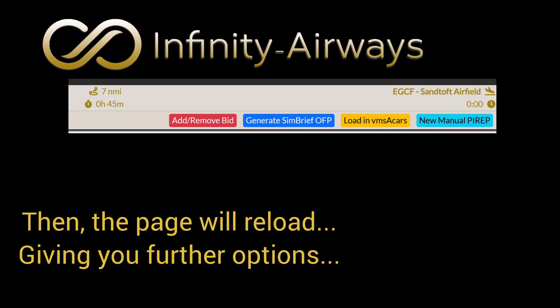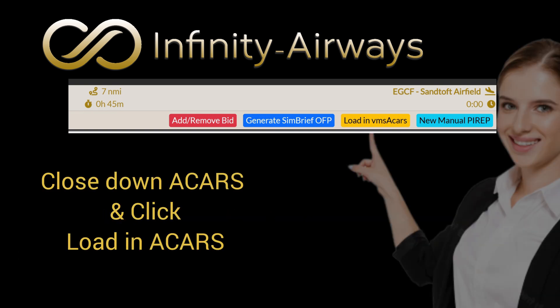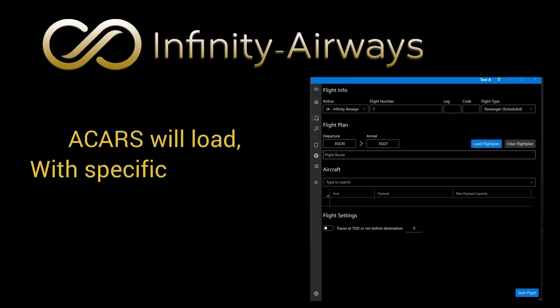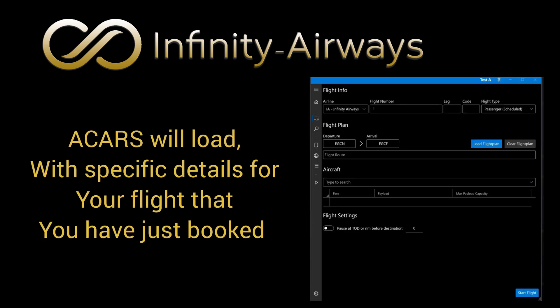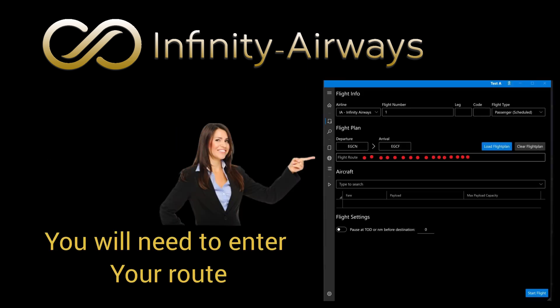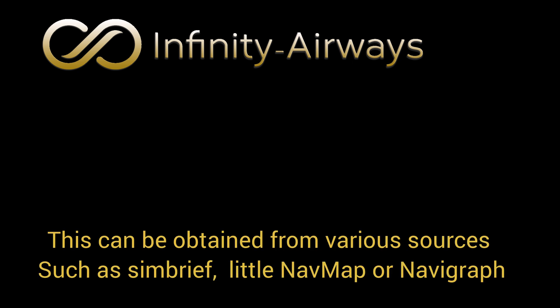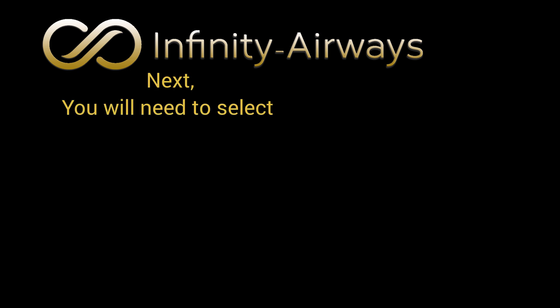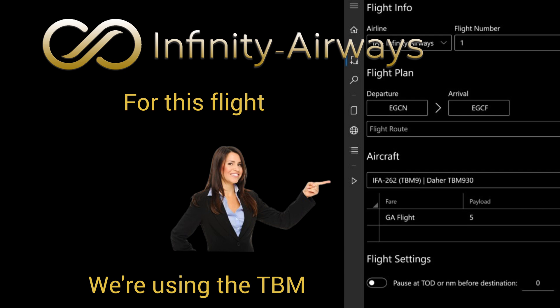Next, you'll see some different options. Make sure ACARS isn't running and then click Load in ACARS. ACARS will load the specific details for the flight that you have just booked. You will need to enter your route. This can be obtained from various sources such as Simbrief, Little Nav Map, or Navigraph. Next, you'll need to select an aircraft. For this flight, we're using the TBM.